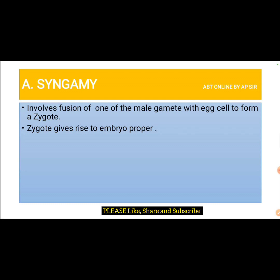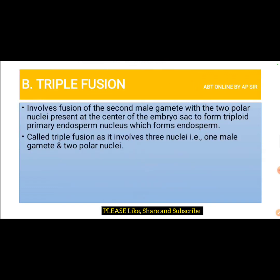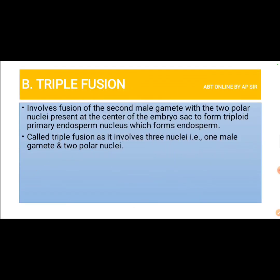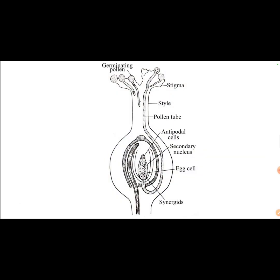The second type is triple fusion, which involves fusion of the second male gamete with the two polar nuclei present at the center of the embryo sac. This results in a triploid primary endosperm nucleus, which gives rise to the endosperm. It is called triple fusion because three nuclei are involved — one male gamete and two polar nuclei. Together, syngamy and triple fusion constitute double fertilization.